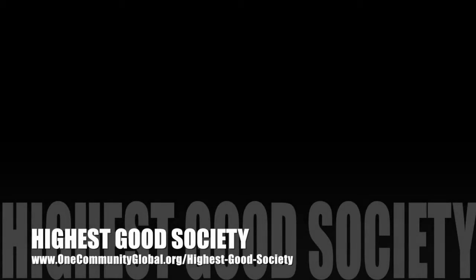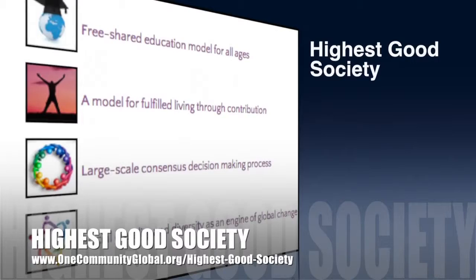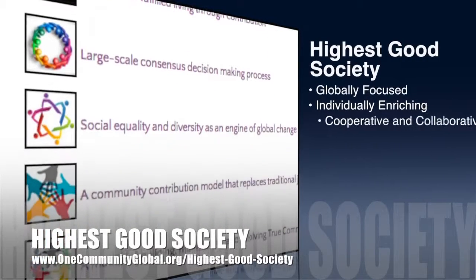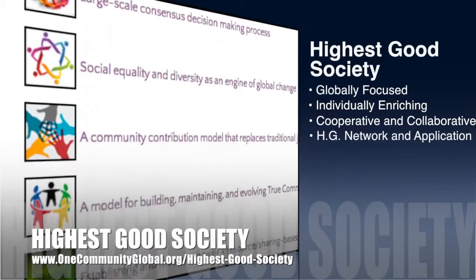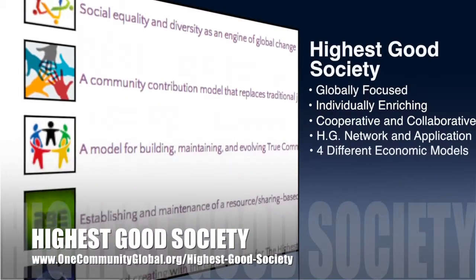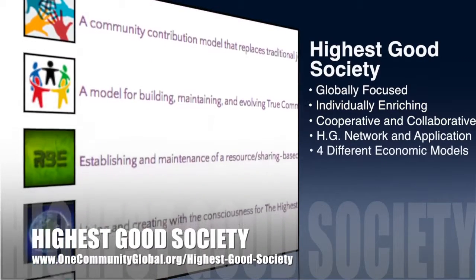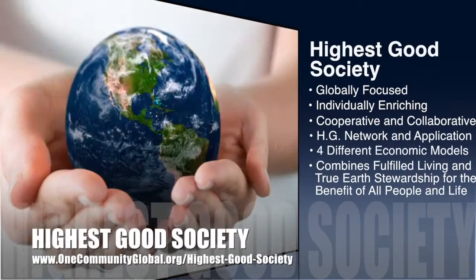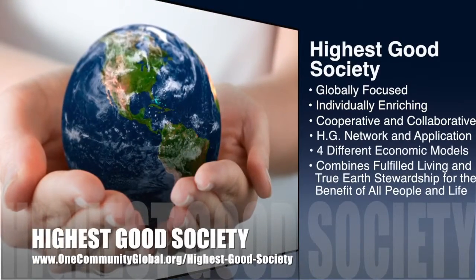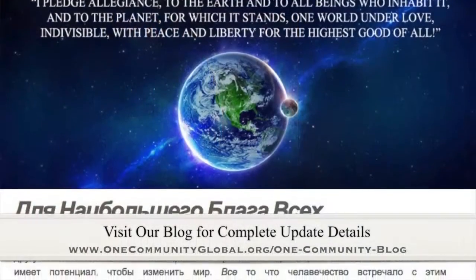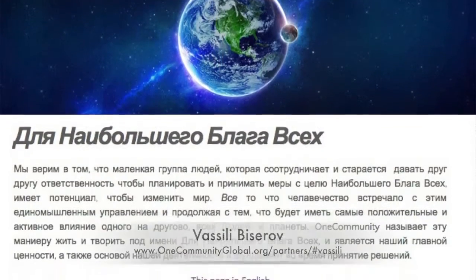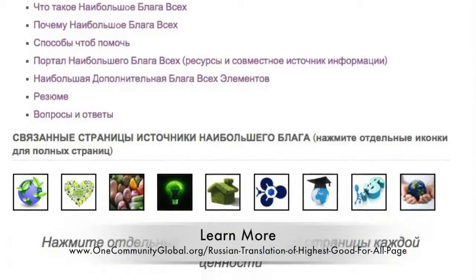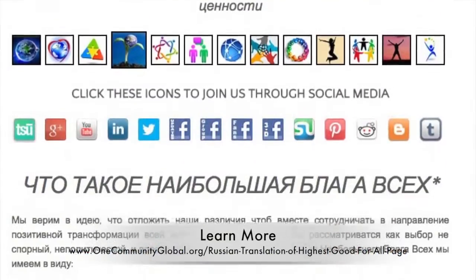One Community's approach to highest good society is globally focused, individually enriching, cooperative and collaborative, includes a highest good network and application, four different economic models, and combines fulfilled living and true earth stewardship for the benefit of all people and all life on this planet. This week, Vasily Bizarov, writer, poet, and translator, finished translating our Highest Good of All webpage into Russian — this is our first page to be translated into this language.